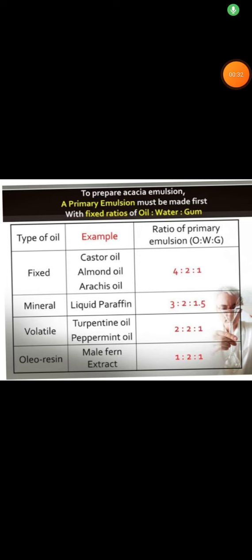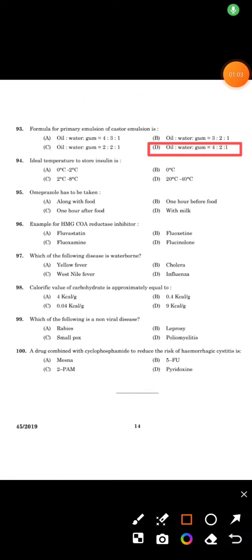I will give some examples. If it is a fixed oil, for example castor oil, almond oil, arachis oil, the ratio of the emulsion is 4:2:1, that is oil to water to gum. Then mineral oils, example liquid paraffin, 3:2:1.5. Volatile oils, examples are turpentine oil, peppermint oil, that is 2:2:1. And oleoresin, example is male fern extract, that is 1:2:1. So here our answer is option D.